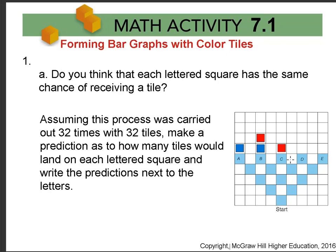Then we ask some questions about this. Do you think that every lettered square has the same chance of receiving a tile? You should explain that and write down why. Now you should assume this process is carried out 32 times with 32 tiles. Make a prediction. How many tiles will be above each letter?